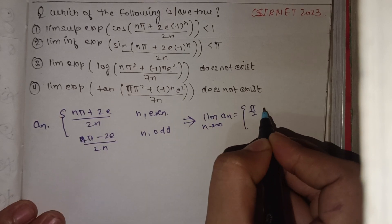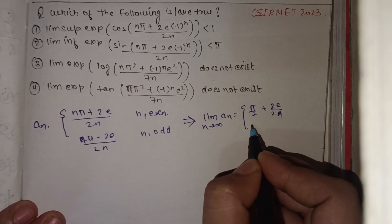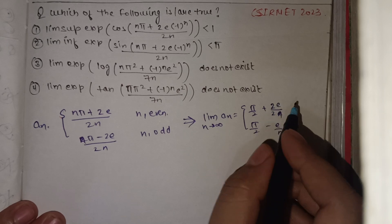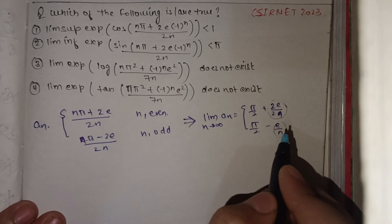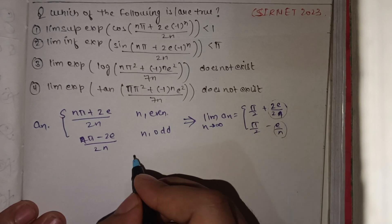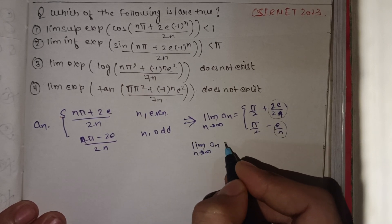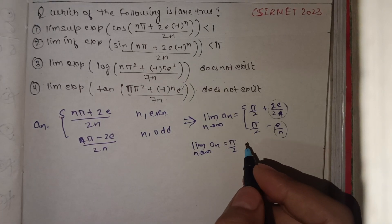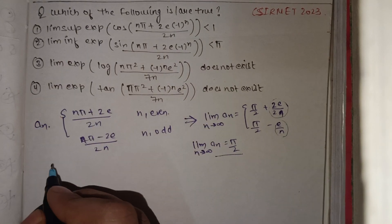We get π/2 + e/(2n) and π/2 - e/n respectively. As n tends to infinity, both extra terms become 0. So the limit as n → ∞ of a_n equals π/2. Since this limit is unique, both the limit supremum and limit infimum are the same, both equal to π/2.